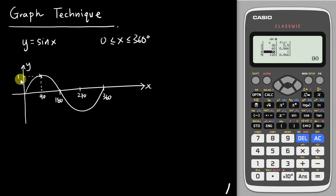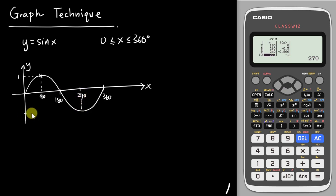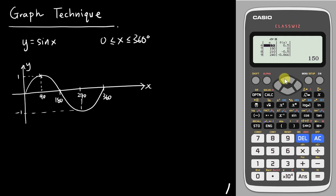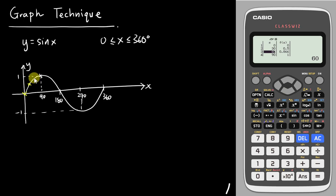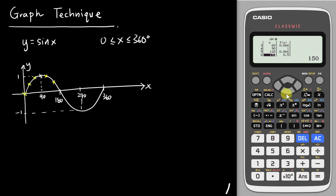So at 90 degrees you get positive 1. At 180 degrees you get 0. At 270 degrees you get negative 1. At 360 degrees you get 0. If you have no idea what the pattern of the graph is, you can just plot the points — at 30 degrees you get 0.5, at 60 degrees you get 0.866, at 90 degrees you get 1, at 120 degrees you get 0.866, at 150 degrees 0.5, and then back to 0 at 180 degrees.